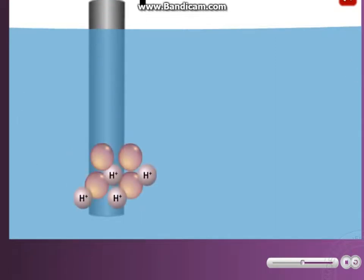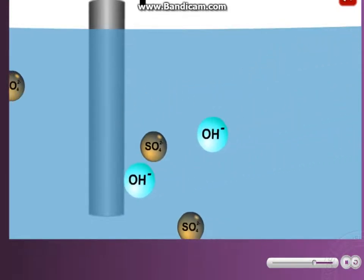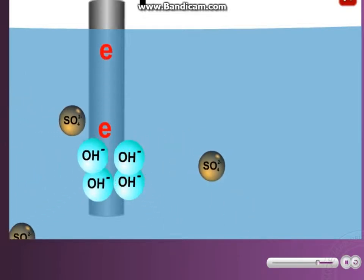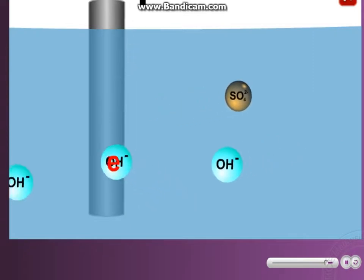Each hydroxide ion releases an electron to form water and oxygen gas. Bubbles of colorless gas can be seen at the anode. If the gas is collected, can you suggest a suitable test to determine the gas?